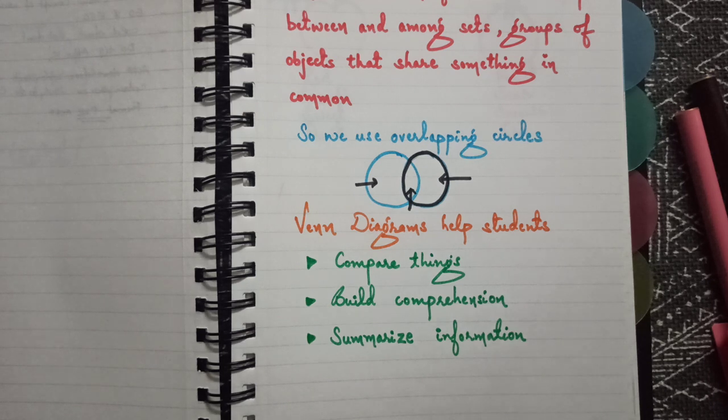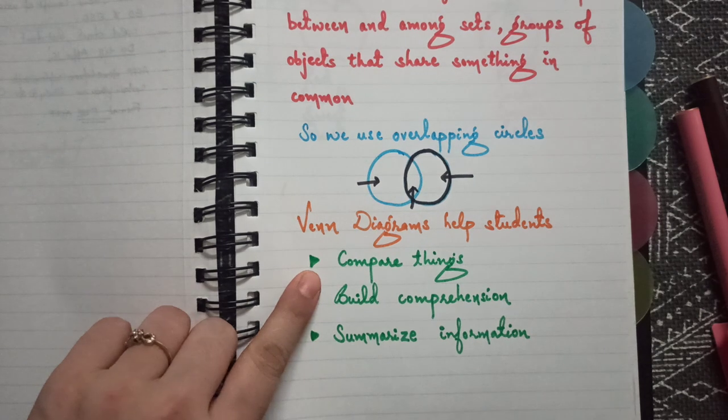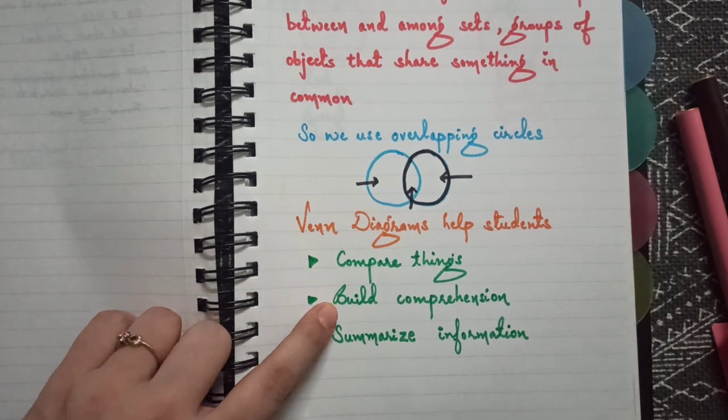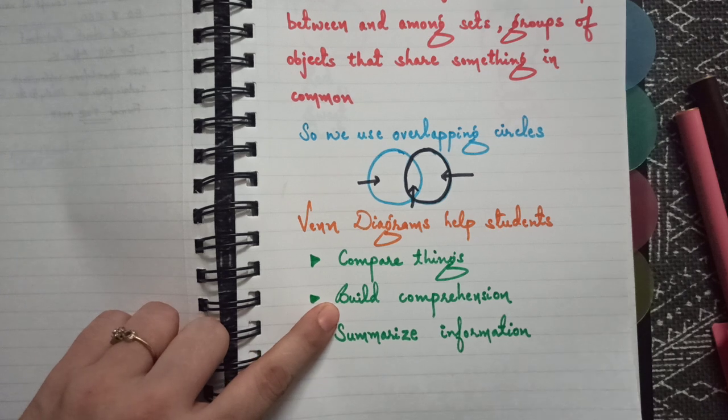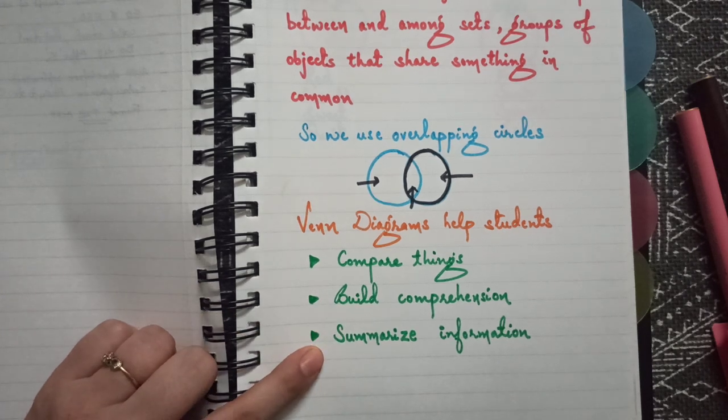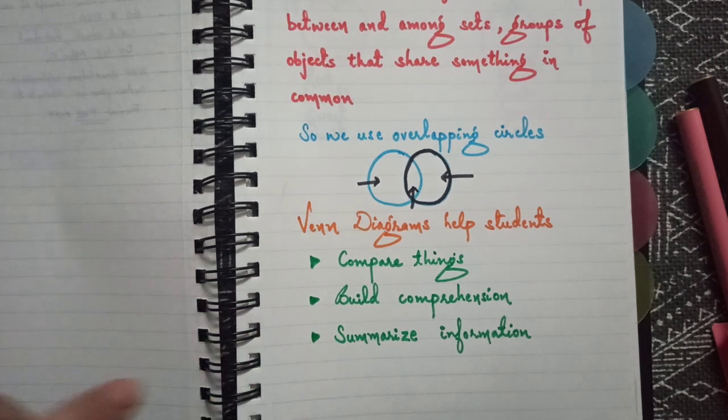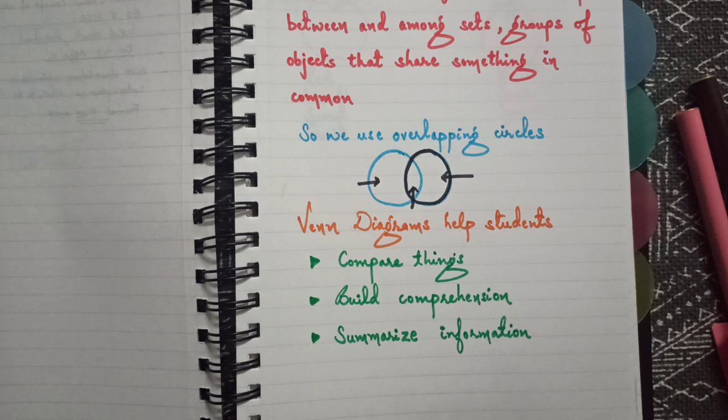Venn diagram helps students in many ways - it helps us to compare things, it helps us to build comprehension, it helps us to summarize the information. These are very small words.